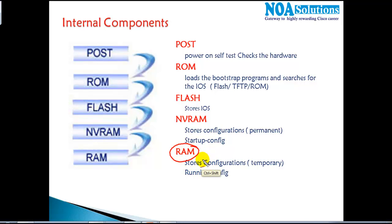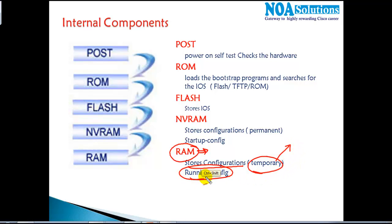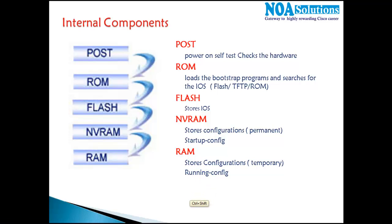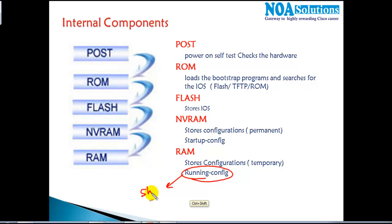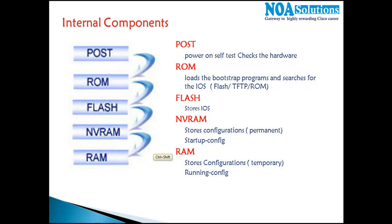We also have RAM — Random Access Memory — which is the main memory, similar to computer memory. It stores your configurations temporarily and is also called running configurations. The command 'show running config' displays the configurations currently present in RAM. So 'show running config' shows what is in RAM, and 'show startup config' shows what is in NVRAM.